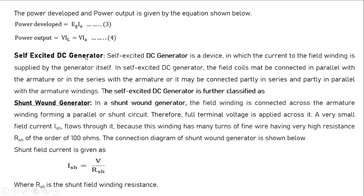Next is the self-excited DC generator. A self-excited DC generator is a device in which the current to the field winding is supplied by the generator itself. In a self-excited DC generator, the field coils may be connected in parallel with the armature, in series with the armature, or partly in series and partly in parallel.